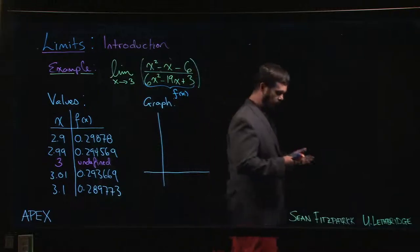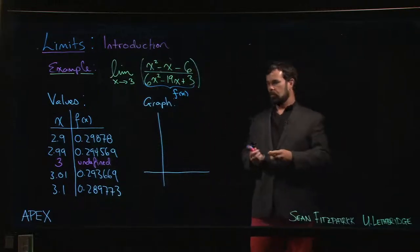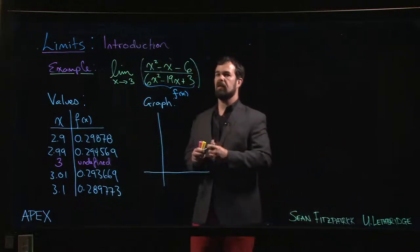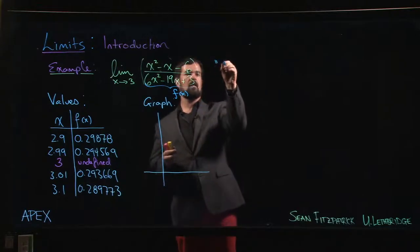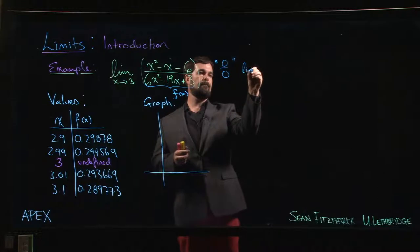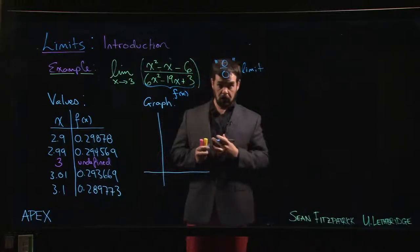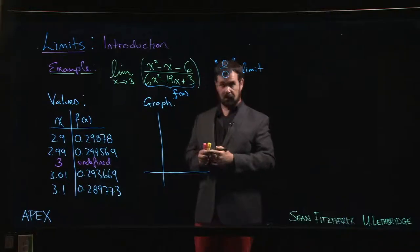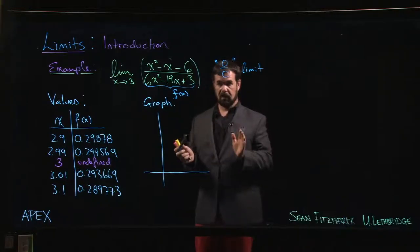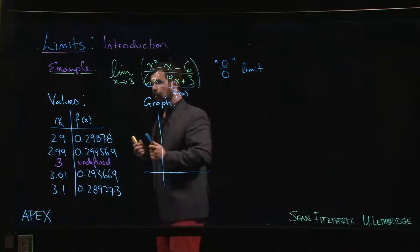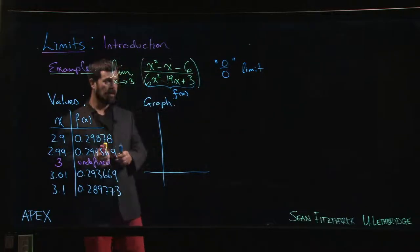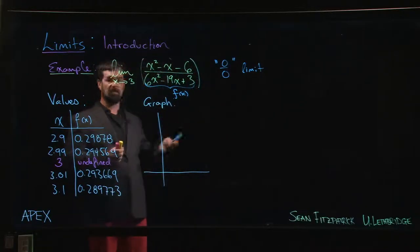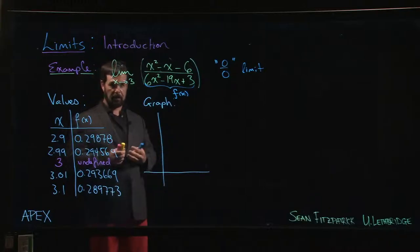This is what's called a zero over zero limit, and an awful lot of the limits that you see in your first calculus course are of this zero over zero form. That sin(x) over x limit that we just looked at, that's also of this zero over zero form. This is what's known as an indeterminate form.